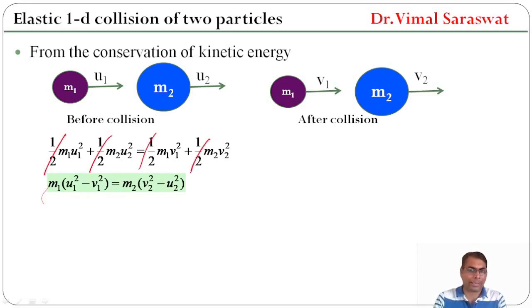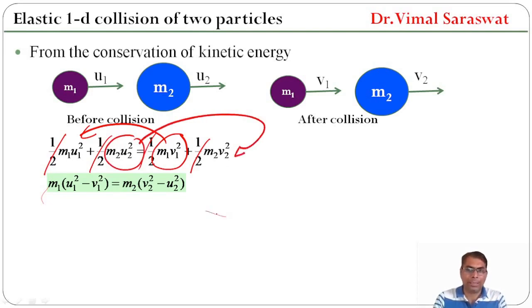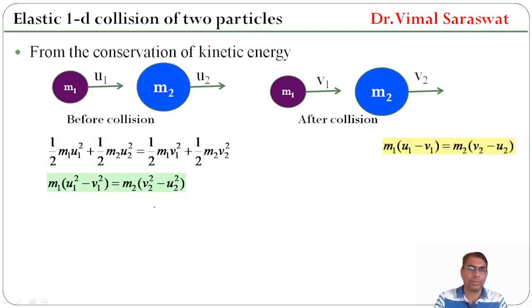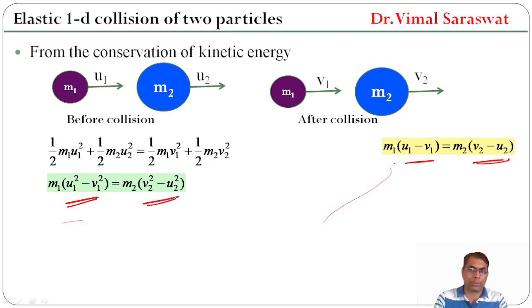The halves cancel out and we transfer M1·V1² to the left and M2·U2² to the right. Taking M1 common gives M1(U1² − V1²), and taking M2 common gives M2(V2² − U2²). So M1(U1² − V1²) = M2(V2² − U2²).